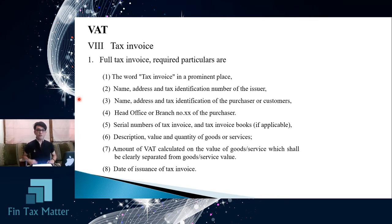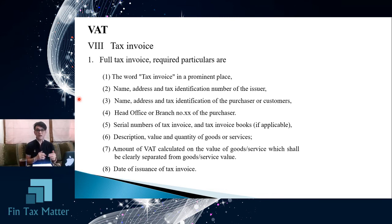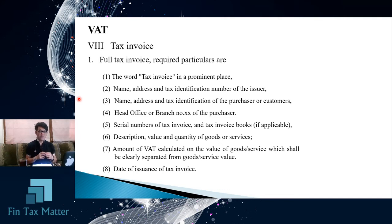The fifth required element is the serial number of the tax invoice and the tax invoice book if applicable, for sequential reference. These serial numbers should be sequential — if a number is skipped with no explanation, it may be treated as an indication that some VAT or tax base was not reported correctly. That is the internal control function of the tax invoice numbering.